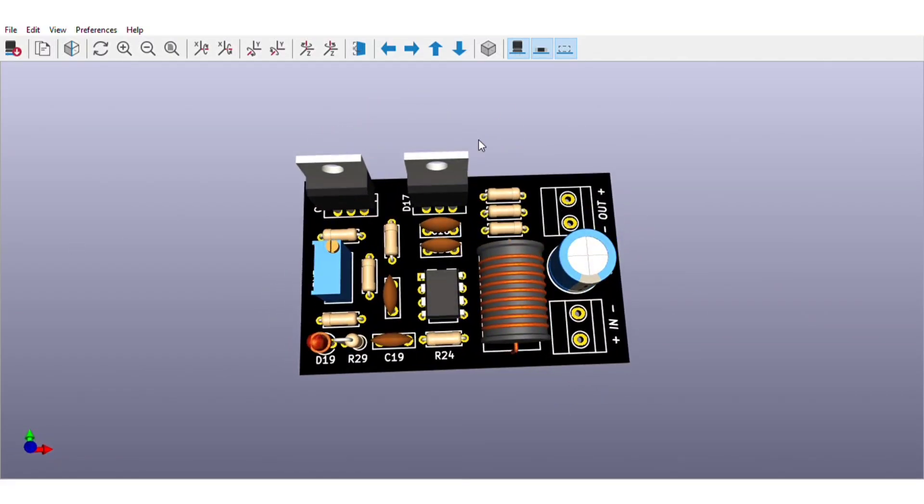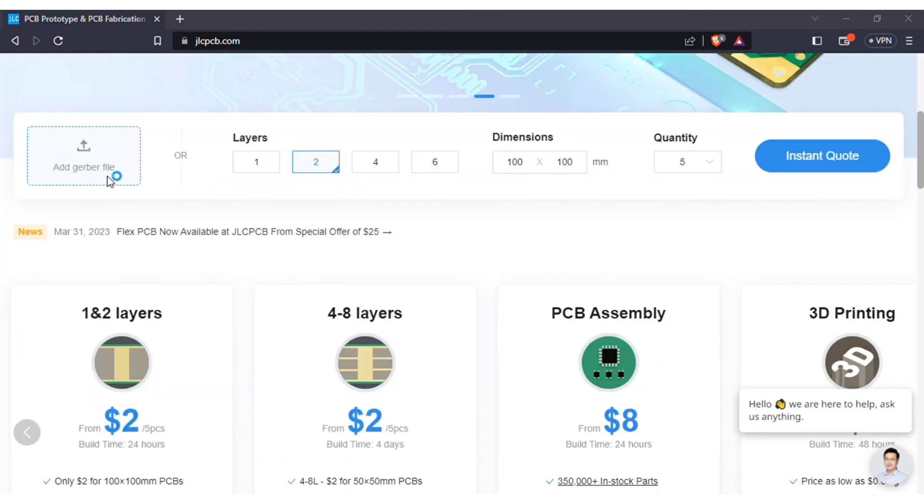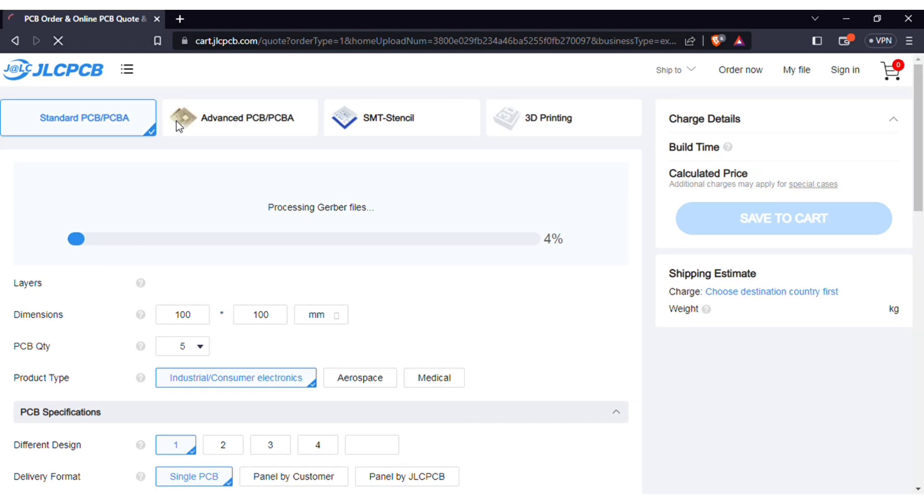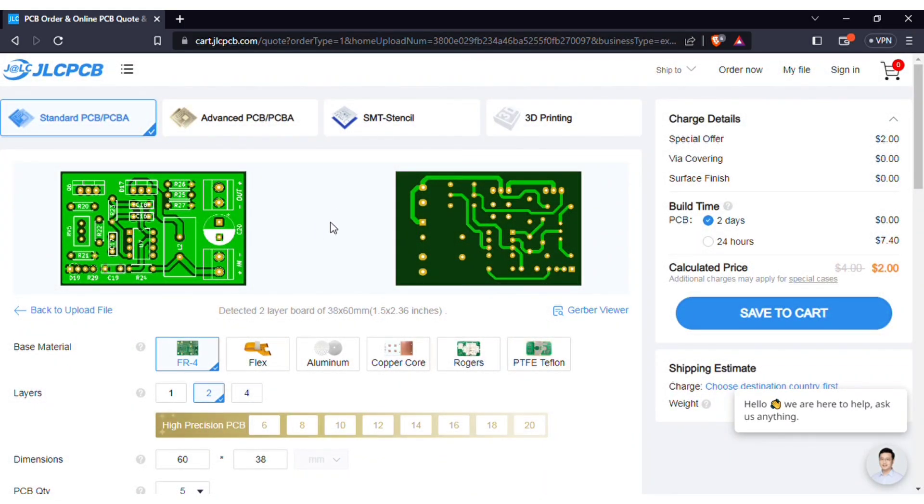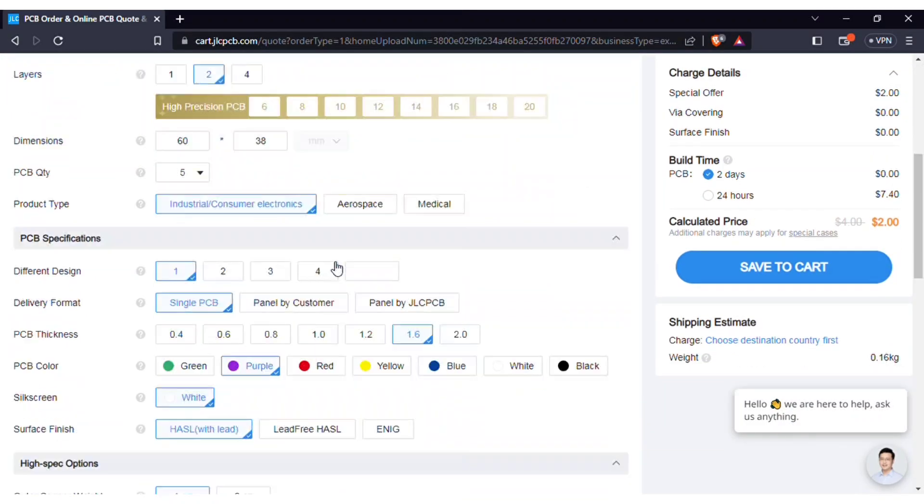In order to manufacture this PCB visit jlcpcb.com and here you can add the gerber file I provided. After uploading you can see the preview of the PCB. You can also change quantity and the color of PCBs as per your requirements.